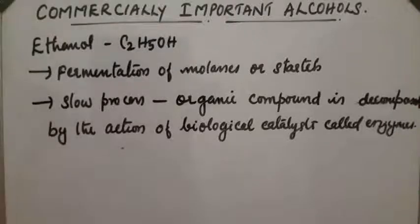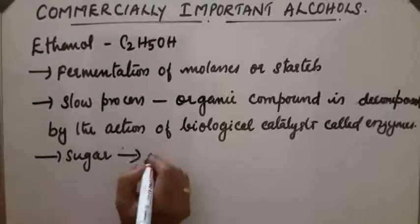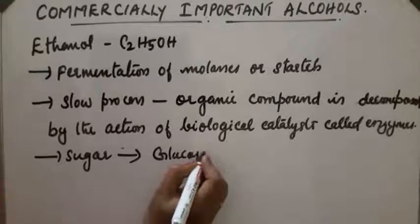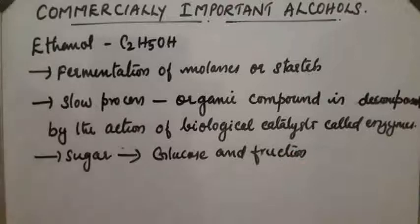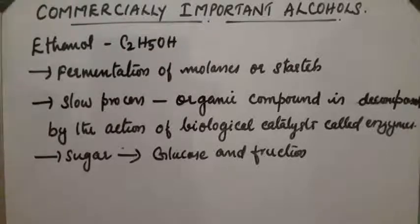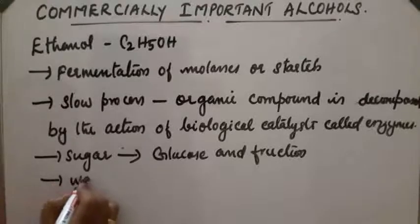The fermentation process involves different steps. First, the sugar in molasses is converted into glucose and fructose by the action of an enzyme called invertase. Then glucose and fructose undergo fermentation in the presence of another enzyme called cymase. This is a slow fermentation process and a dilute solution of alcohol called 'wash' is obtained.